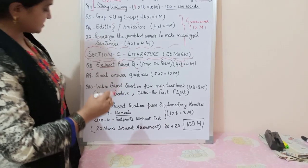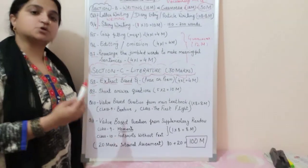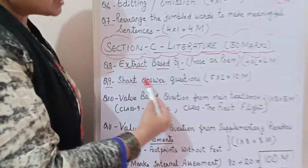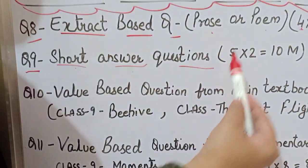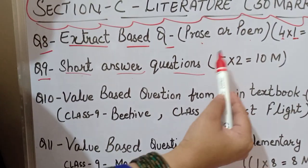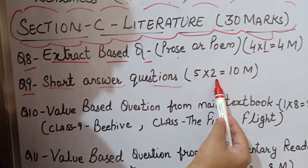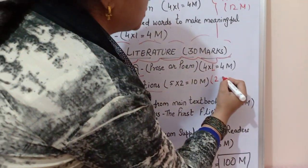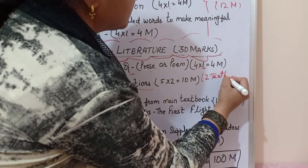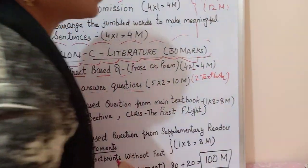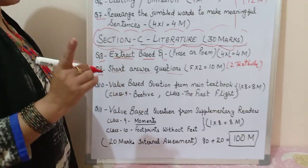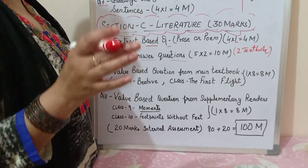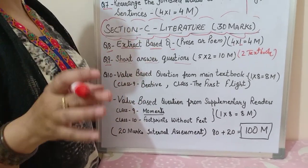Question number nine is short answer questions. You are given six questions and you have to attempt five, carrying two marks each, totalling ten marks. These questions come from your two textbooks — the main reader and the supplementary reader.